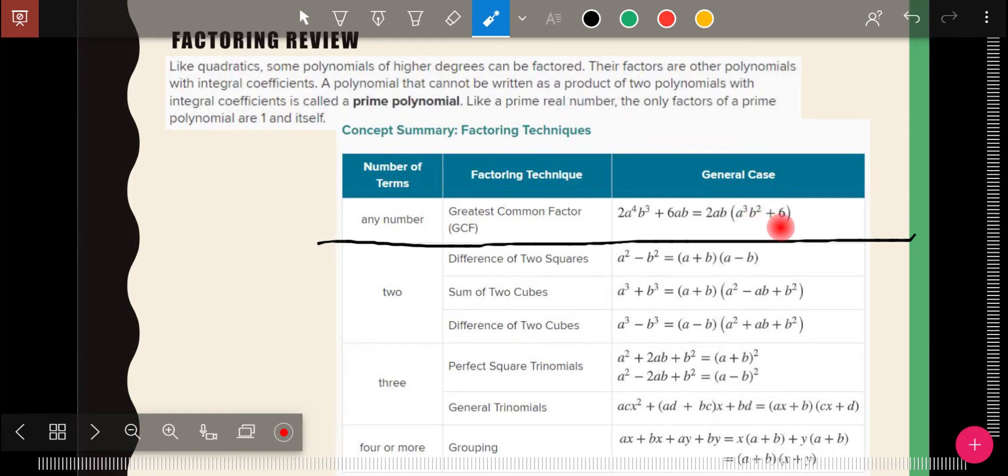You're always going to look for greatest common factor. And you always want to look for that every problem because it's either going to be all you do, or it's at least going to simplify or make the problem easier to work with. And so here they took out the 2ab and have this left. Now, with what's left, you might still have more to do. There's two terms left, and so now we would look at this box. With two terms, is it a difference of two squares? Is it a sum of two cubes? Or is it a difference of two cubes? If it's one of those three things, I have to do more.